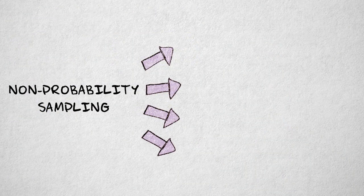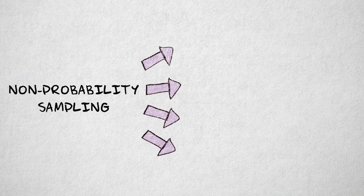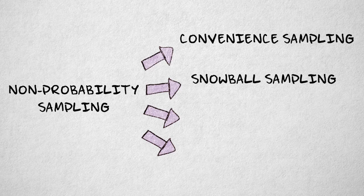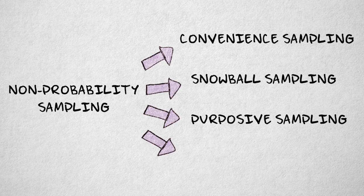There are several types of non-probability sampling. I'll discuss the four most common types: convenience sampling, snowball sampling, purposive sampling, and quota sampling.